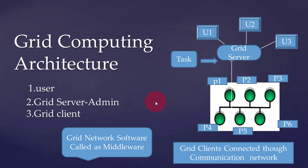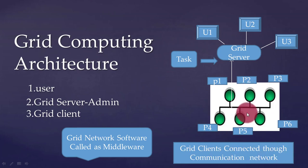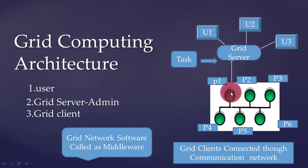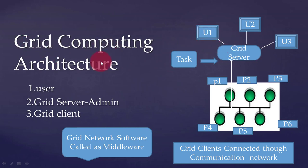Now we will see the architecture of grid computing. In the architecture there are three parts: first, the users U1, U2, U3; second, the grid server and admin; and third, the grid clients connected to the communication network. For example, user U1 gives a task to the grid server. The grid server divides the task across nodes within the grid. Each node performs the task independently and returns the result to the grid server, which merges the results and returns them to user U1.